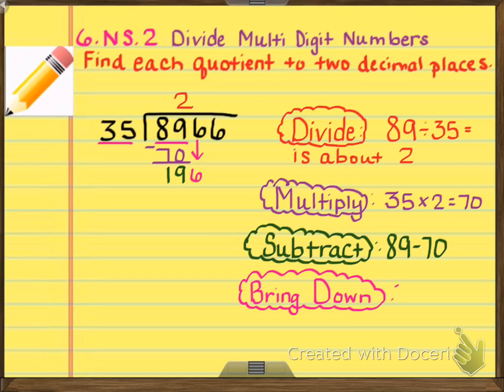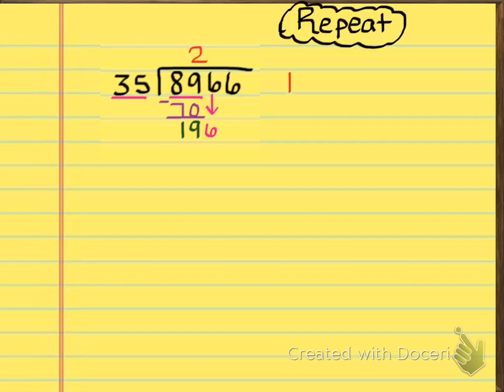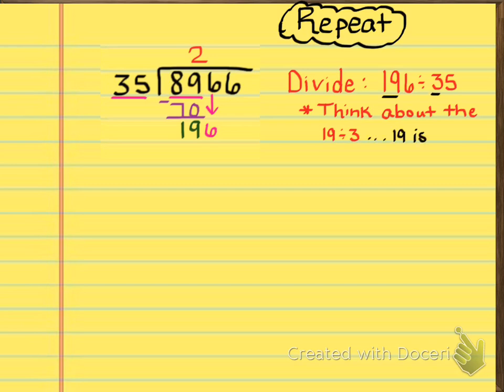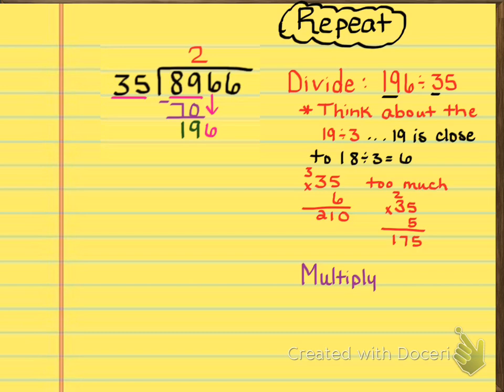All right, so let's go ahead and take a look at our next screen. On the next screen, you can see that I've asked you to repeat the same process. We have 196 divided by 35. So you can see here that I asked you to think about 19 divided by 3 and that 19 is close to 18, and 18 divided by 3 is going to be 6. So now you have 35 times 6, that's a little too much, that gave us 210. And then you have 35 times 5, so now that gives us 175. So that's the one that we're going to work with.